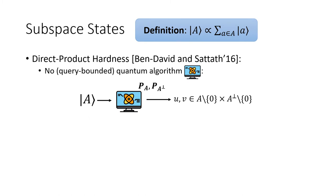For convenience, we refer to two programs as the membership checking programs for space A and A-perp. P_A takes a vector and outputs one if and only if the input is a vector in A, and similarly for P_{A-perp}. Subspace states satisfy the direct product hardness property: for any query-bounded quantum algorithm given a single copy of a subspace state for A, even with oracle access to both membership checking oracles, it cannot find two non-zero vectors in A and A-perp.